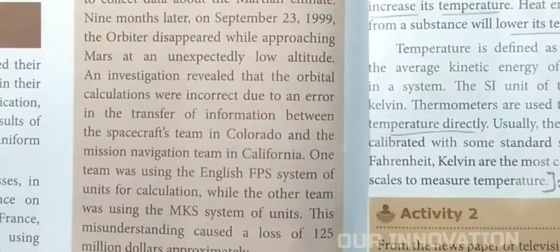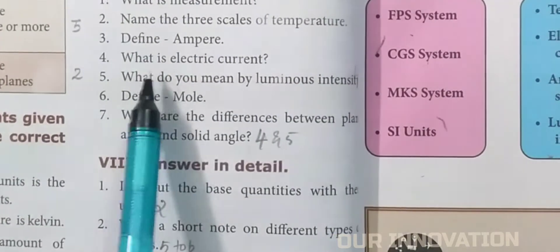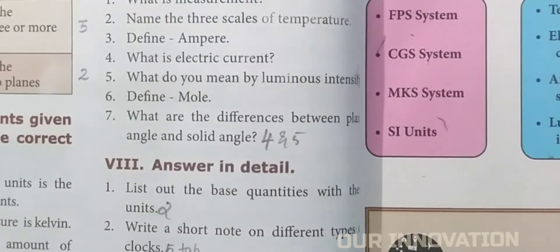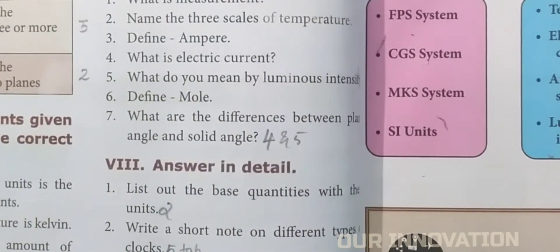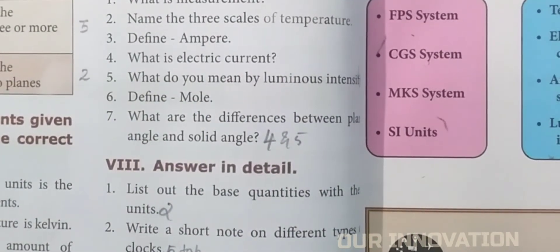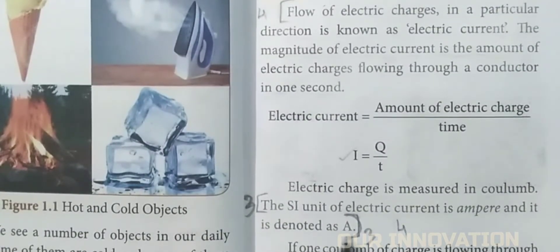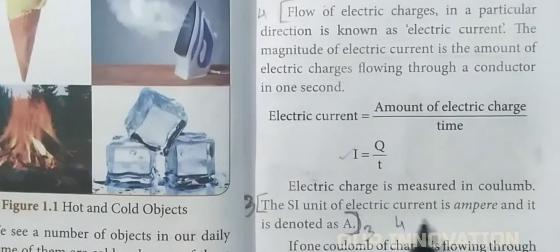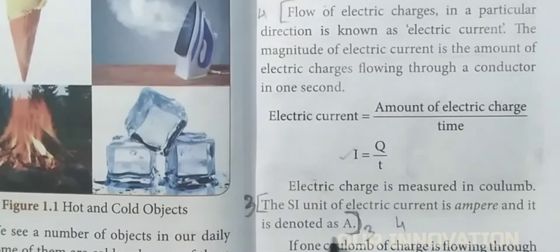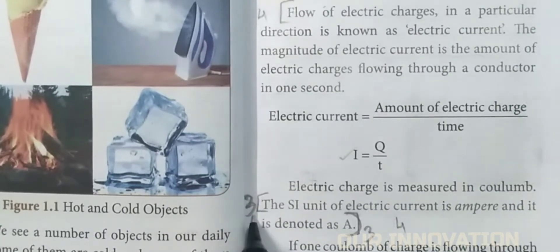Define ampere. The SI unit of electric current is ampere and it is denoted as A. So mark it from here until the end.